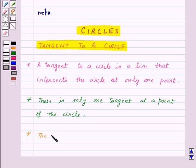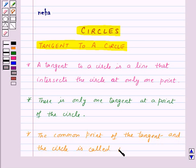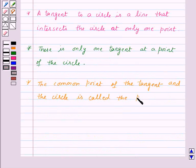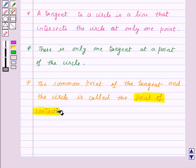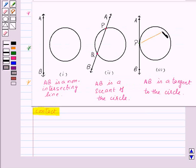Also, the common point of the tangent and the circle is called the point of contact. Here P is the point of contact.